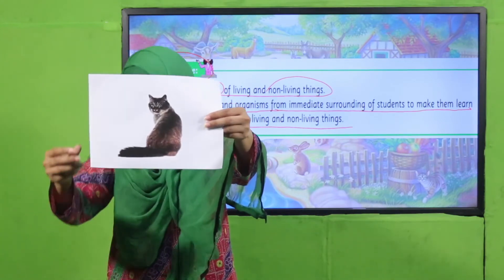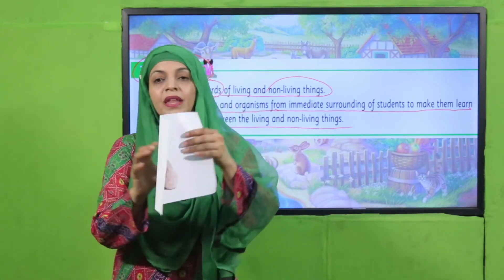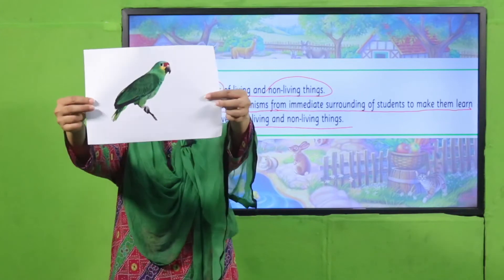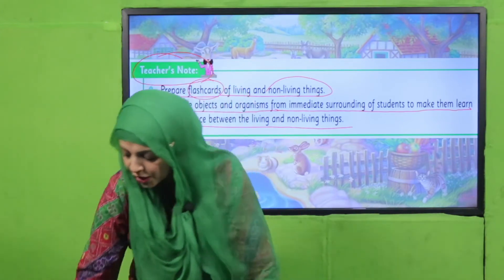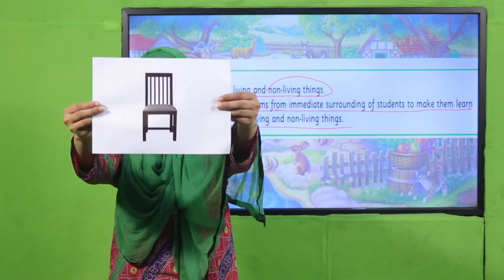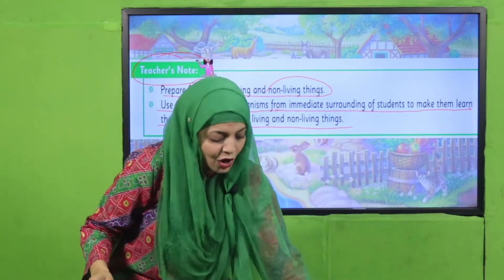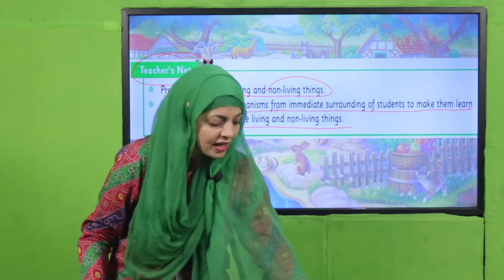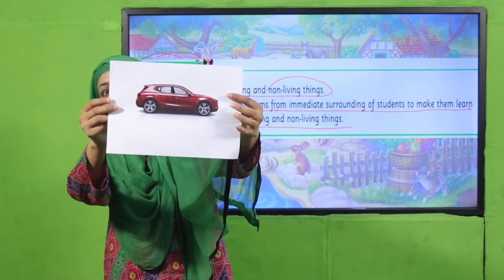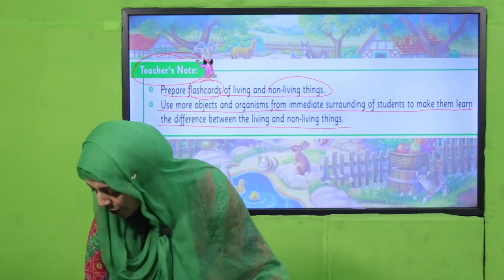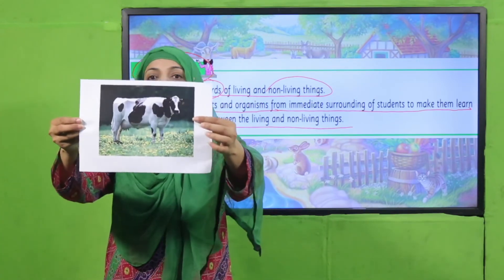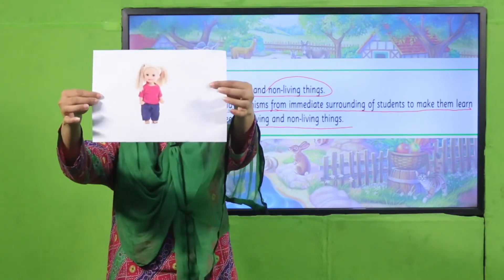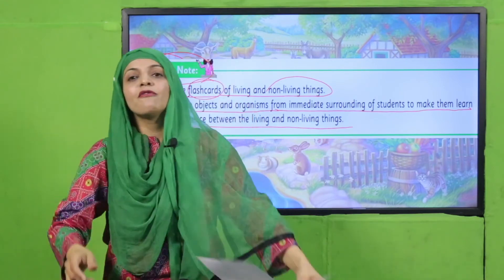Then this is a cat — living or non-living? Living. Very good. Then this is a teddy bear — living or non-living? Very good, non-living. Then this is a parrot — living or non-living? Living. Very good. Then comes a chair — living or non-living? Very good, it is non-living. Then comes a bicycle — living or non-living? Non-living it is. Very good. Then a car — living or non-living? Non-living. Very good. This is a cow — living or non-living? Living thing. Very good. And last — a doll. Living or non-living? Very good, it is non-living.